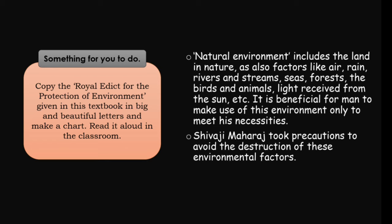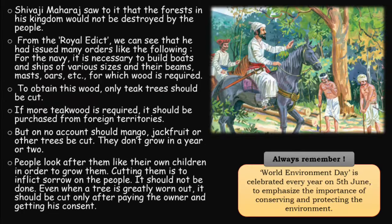Shivaji Maharaj took precautions to avoid the destruction of the environment. He saw to it that the forests in the kingdom could not be destroyed by the people. From royal edicts, we can see that he issued many orders. For the navy, it is necessary to build boats and ships of various sizes, and the beams, masts, and other parts require wood.